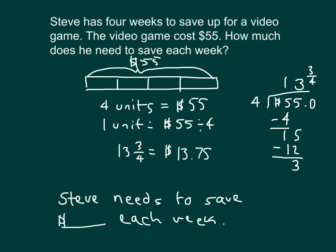Now, I could have added zeros, dropping zeros here, to be able to get the rest of my answer. And that's possibly what it is that you did as you were solving this problem. That also is a valid approach when you're dealing with dollars and cents. So he needs to save $13.75 each week to be able to save up $55 for this video game.